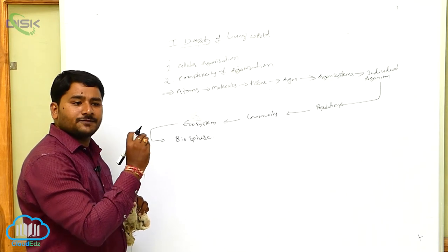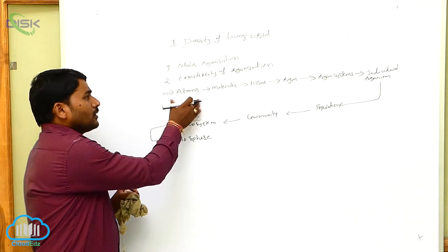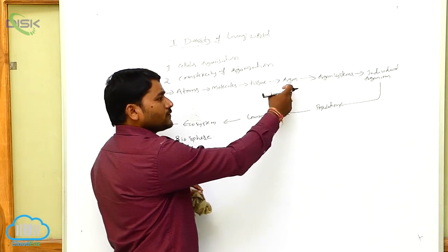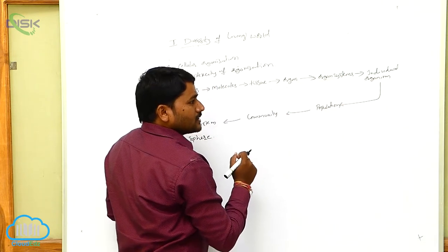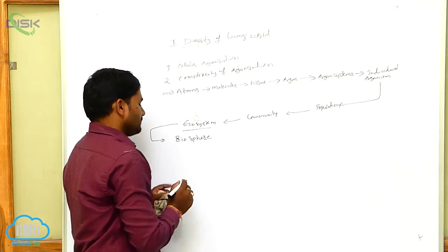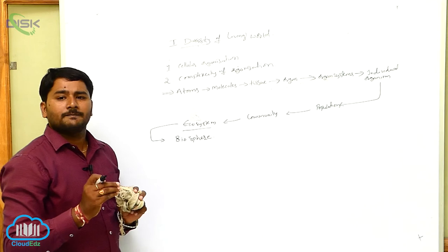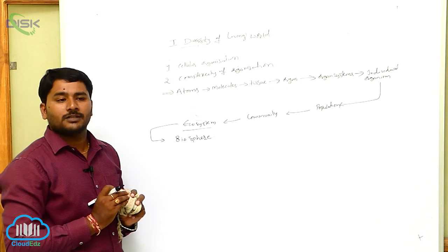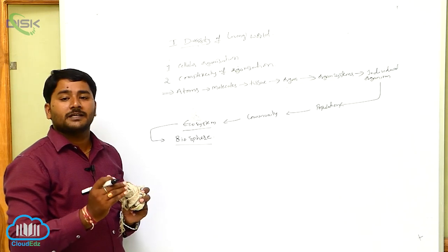Organization starts from the simple and goes towards the complex. It begins with atoms; atoms fuse and form molecules; molecules fuse and form tissue; tissues form organs; organs form organ systems; organ systems form an entire organism. Individuals make a population; population makes a community; communities make an ecosystem; ecosystems fuse and form the biosphere. The biosphere is the part of the earth occupied by living organisms.